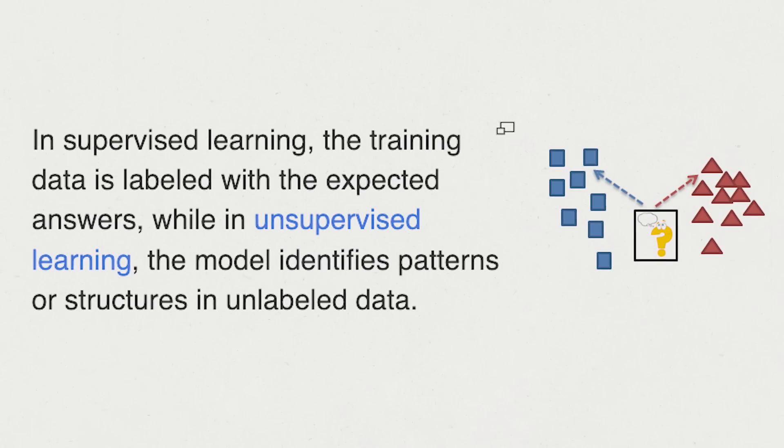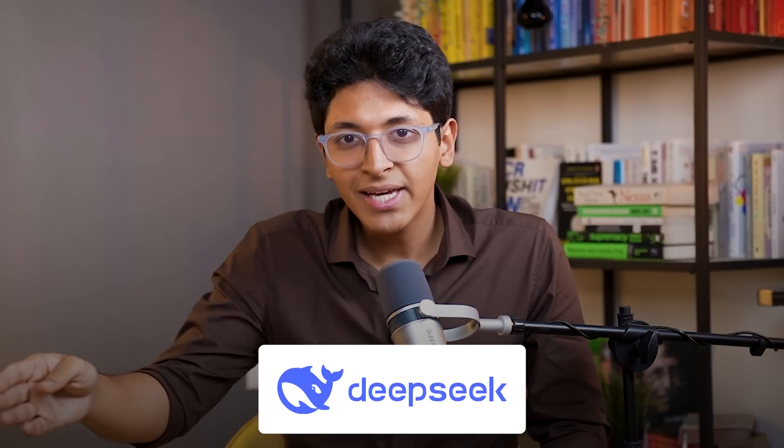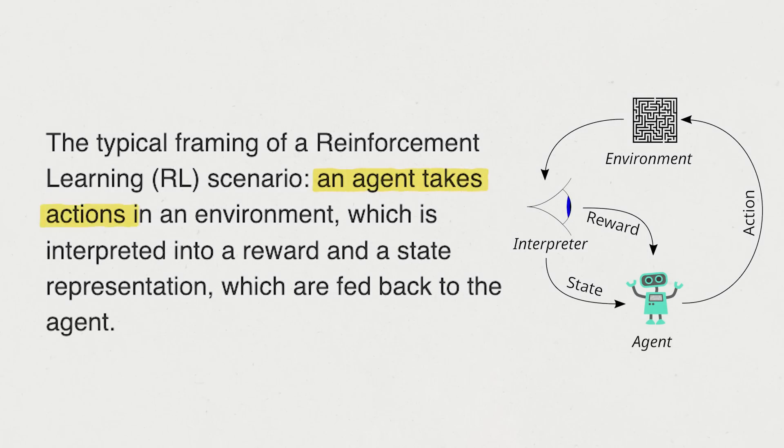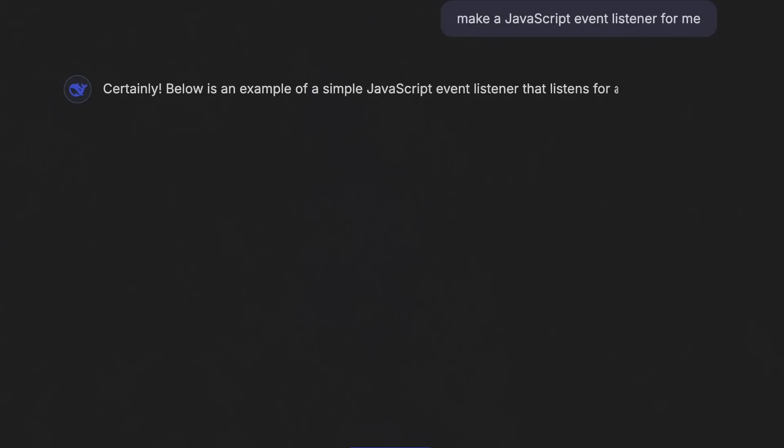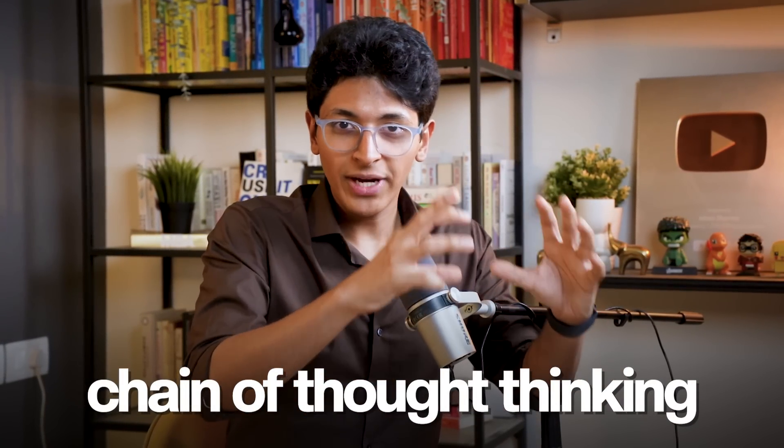But why not just use ChatGPT? There's a difference. ChatGPT is trained on supervised learning, where data is labeled and the model learns what things are called. DeepSeek R1 is trained using reinforcement learning — there is an agent with an incentive to keep increasing its score, so every time you give it a problem, it analyzes what it can do to improve. This means DeepSeek R1 uses chain-of-thought thinking: it comes to a conclusion, then checks if it's wrong, double and triple checks, and that iterative checking gives it a new perspective, making it a better model to use.